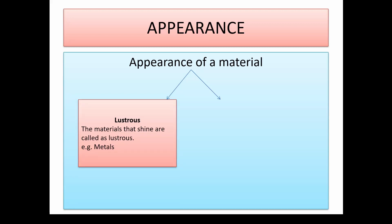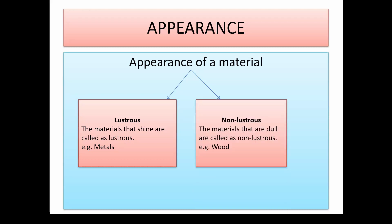Based on appearance, materials can be divided into two: lustrous and non-lustrous. Some materials are shiny whereas others are not. The shine present in a material is called luster, and materials that shine are lustrous materials. All metals are lustrous — they have a particular shine. Materials that are dull and do not shine are called non-lustrous. Metals fall into the category of lustrous materials, and wood would be non-lustrous.